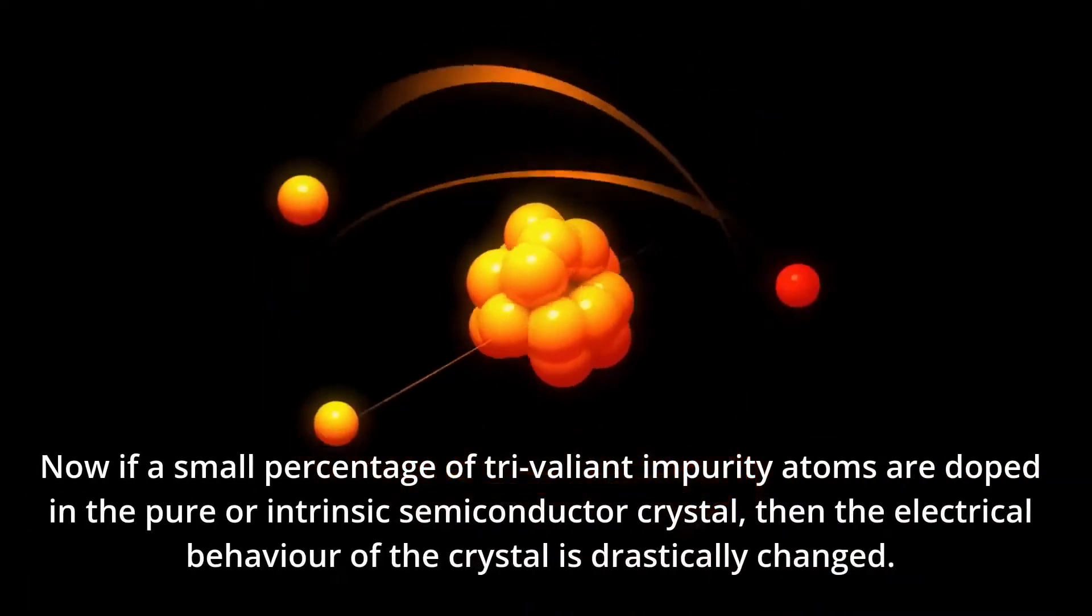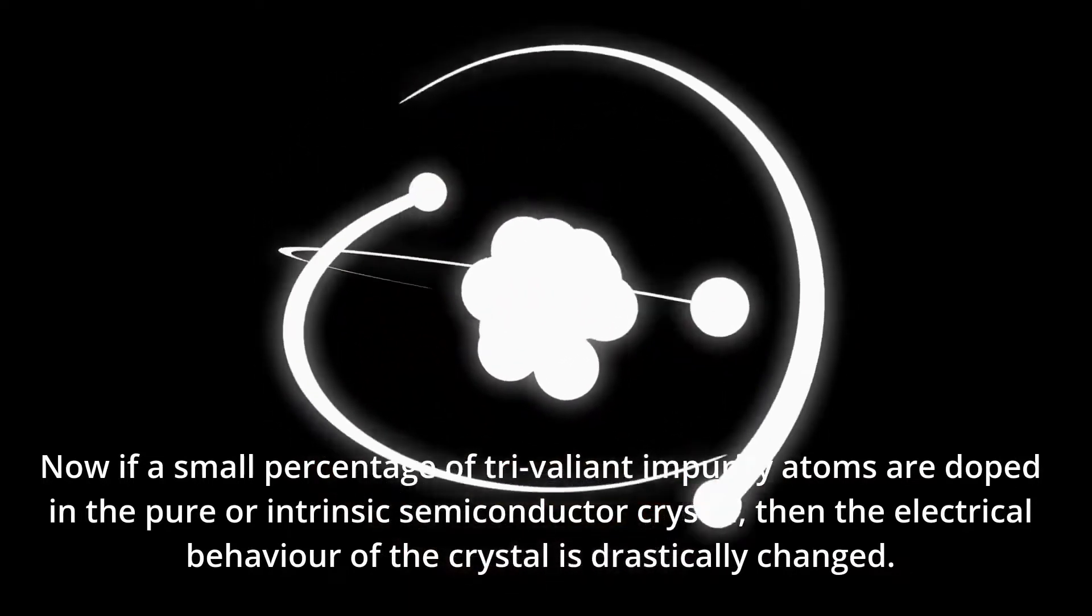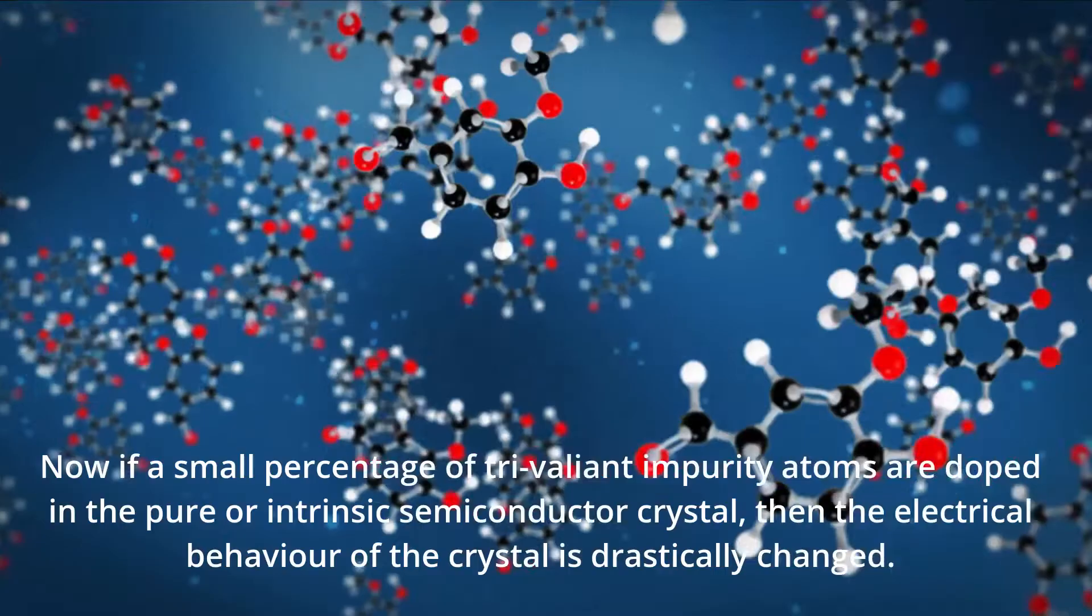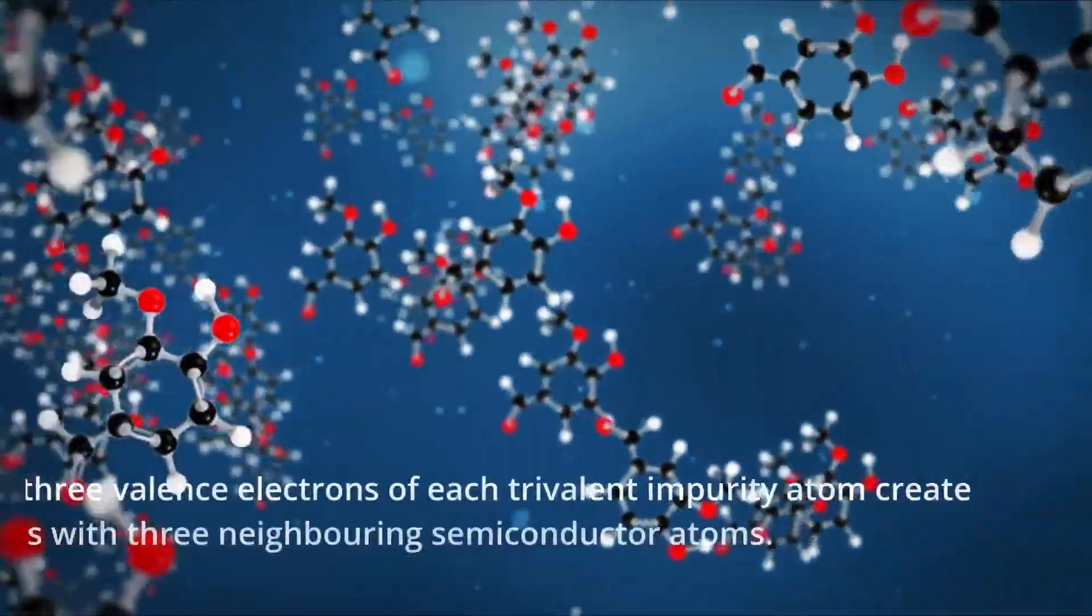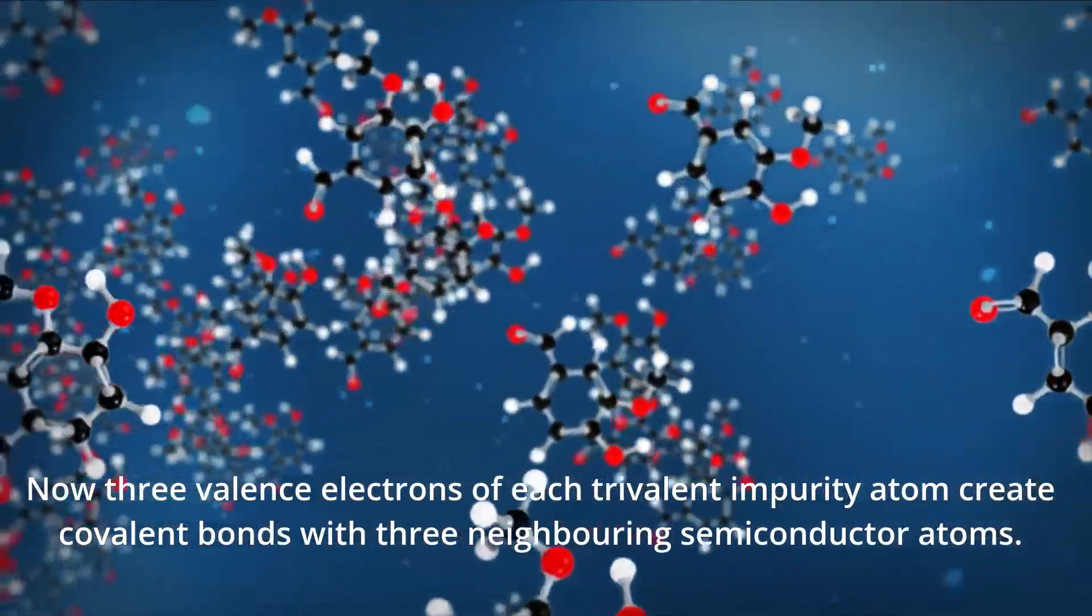Now if a small percentage of trivalent impurity atoms are doped in the pure or intrinsic semiconductor crystal, then the electrical behavior of the crystal is drastically changed. Now three valence electrons of each trivalent impurity atom create covalent bonds with three neighboring semiconductor atoms.